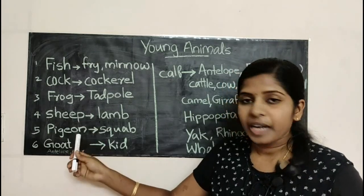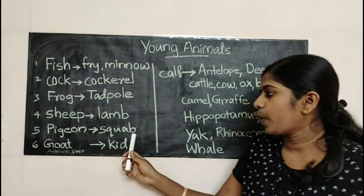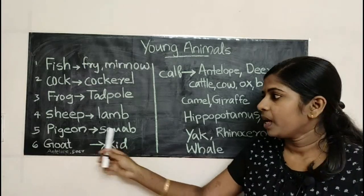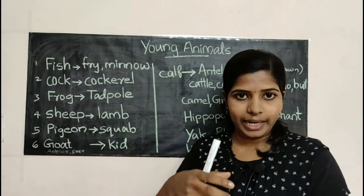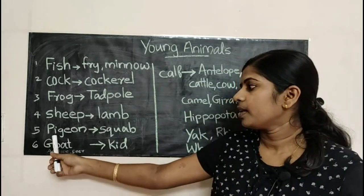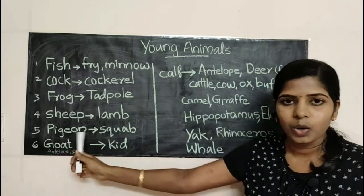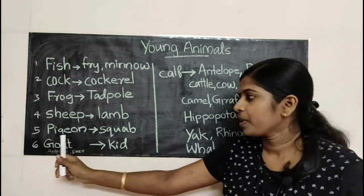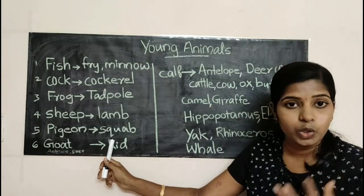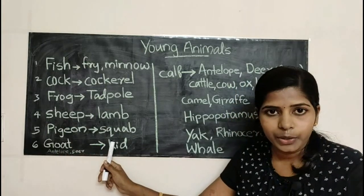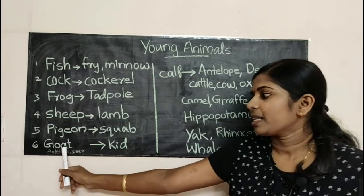Pigeon. It's a squab. This squab is like an ice cube. Pigeon. A squab would be as good. A crab would be as good as a pigeon. That is goat.